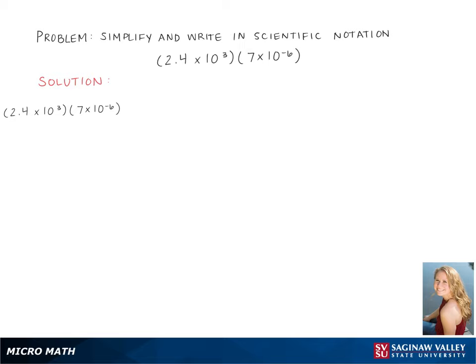Here we are simplifying and writing in scientific notation the expression 2.4 times 10 to the third times 7 times 10 to the negative 6.